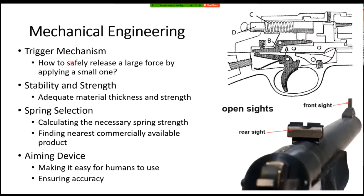Just as important is making sure your catapult won't snap because the springs are too large. You need to make sure the pieces of wood or metal you use to build it are strong enough to withstand the pulling force of the springs. This brings us to the next point: we need to know what springs to get. We need to make a calculation to understand what ballpark of spring we need, but then the real challenge is finding a commercially available product nearest to it. Engineers spend a lot of their working hours looking for these commercially available parts.